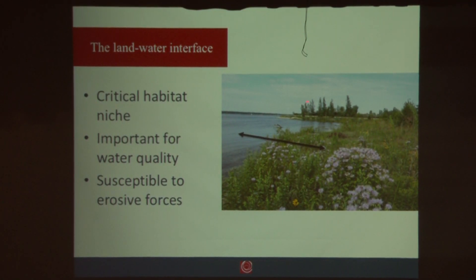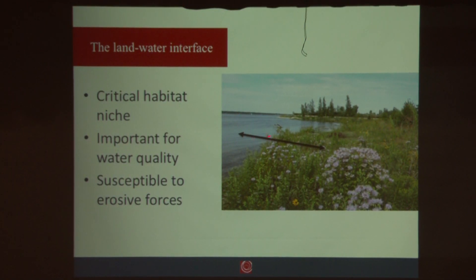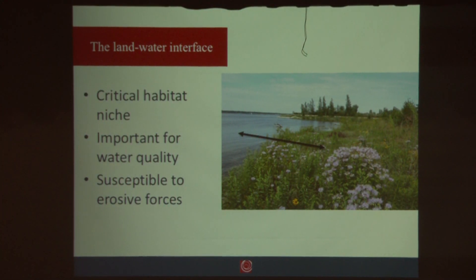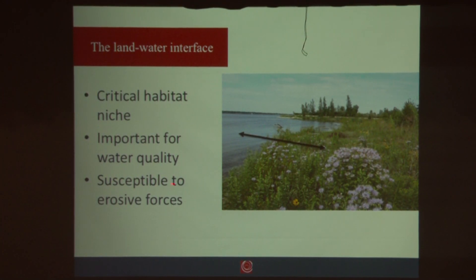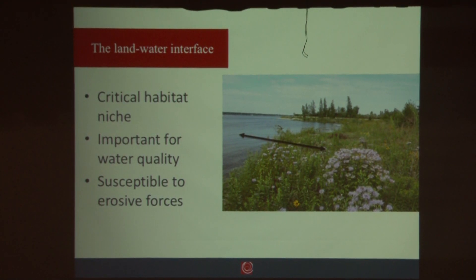When we start talking about natural shorelines, one of the things we like to focus on is what we call the land-water interface — the area where the lakeshore interacts with the lake itself. This is an incredibly critical habitat niche. All of our amphibians, fish, mammals, and insects rely on this very narrow band along the lakeshore to cross back and forth from the water to the land. And it's not only one of our narrowest habitat niches but also very susceptible to erosive forces.